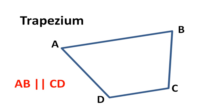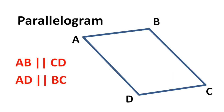Next we come to a trapezium, in which one side AB is parallel to its opposite side CD. There is no relationship between AD and BC.